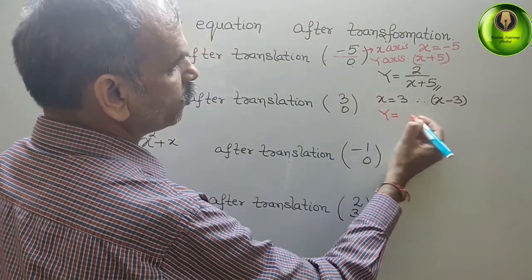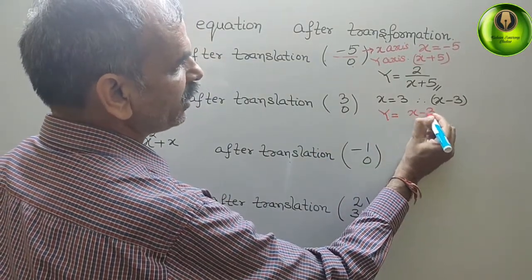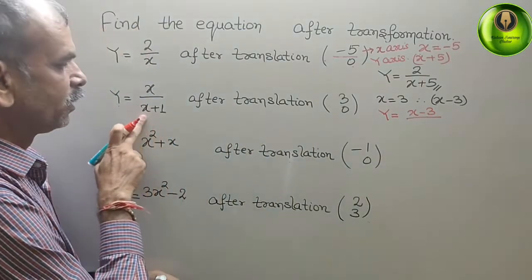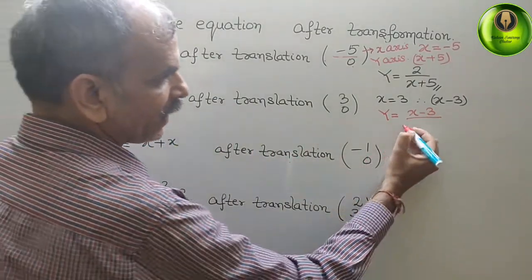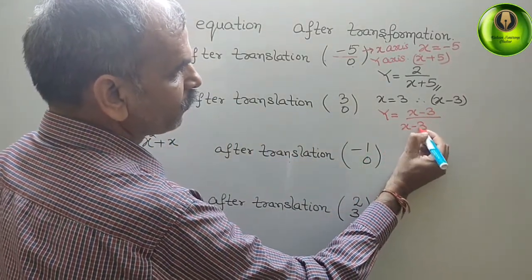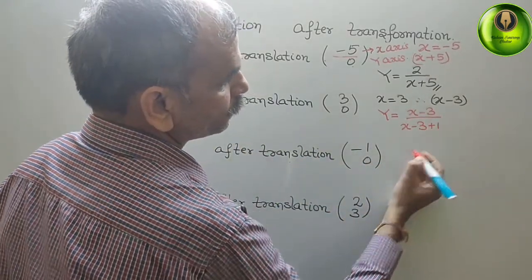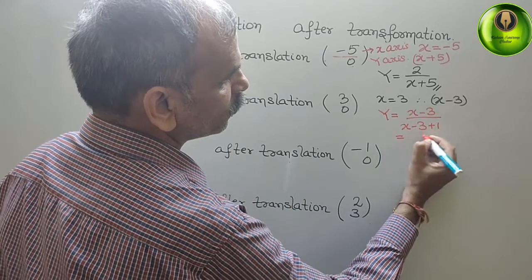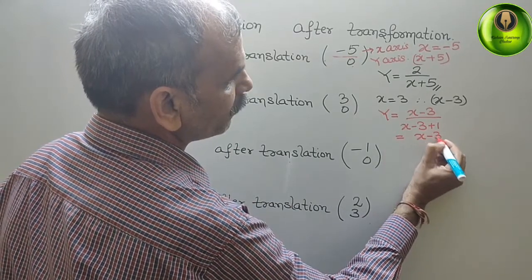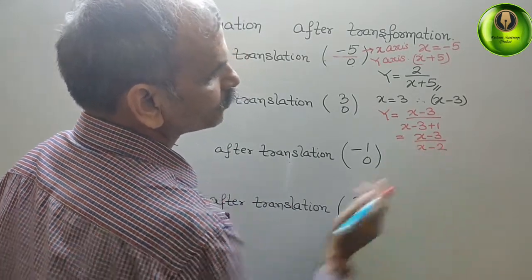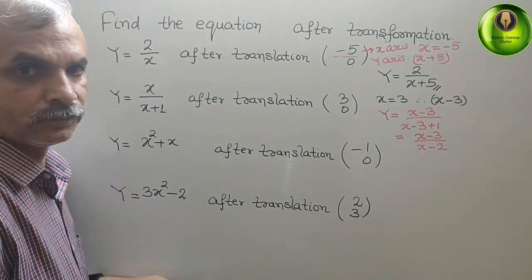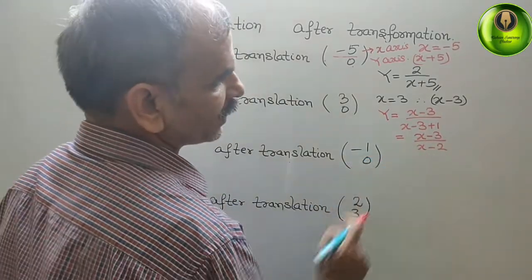So we will write y equals x minus 3 by x again x minus 3 plus 1. That equals x minus 3 by x minus 2. So this we have to write.